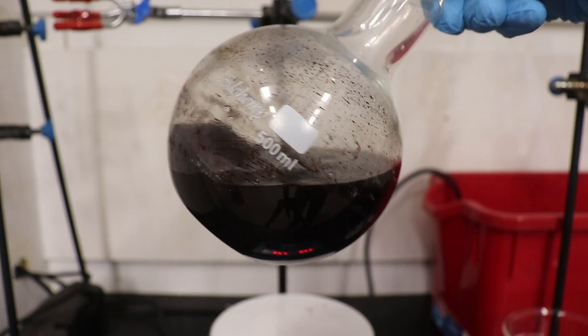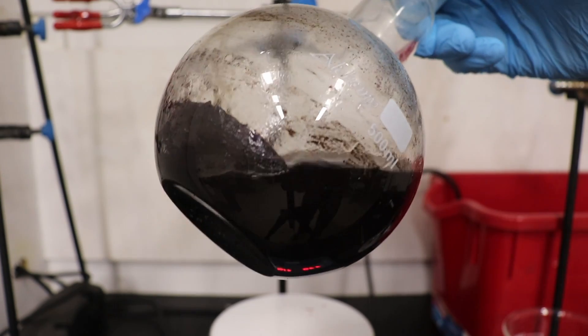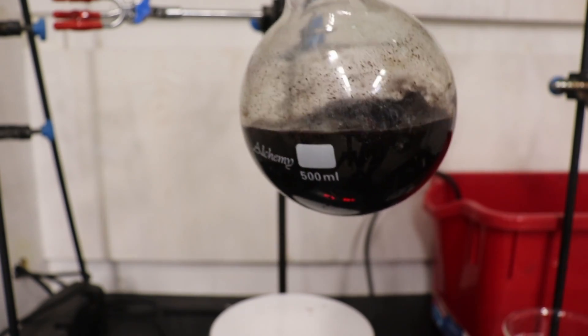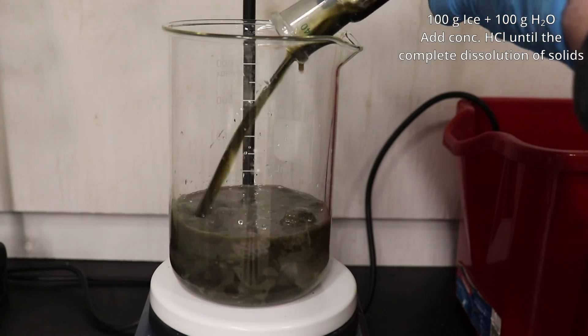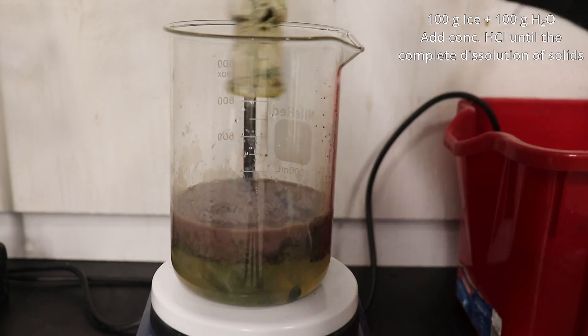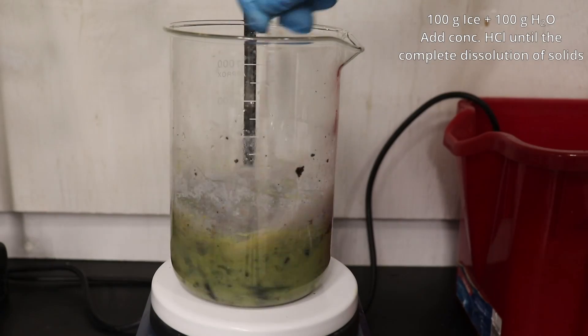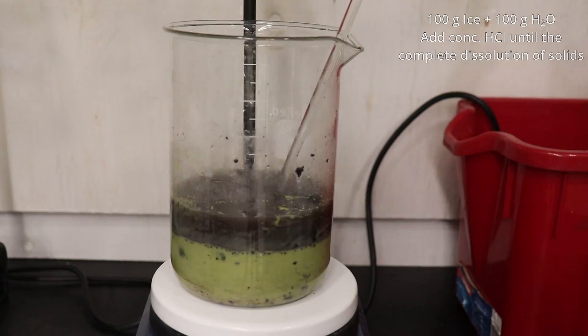The solid mass at the bottom of the flask was broken up with a spatula and by stoppering and shaking the flask. The reaction was quenched in a mixture of 100 grams of ice and 100 grams of water. Then concentrated hydrochloric acid was added until the solids were completely dissolved.